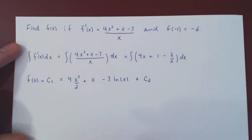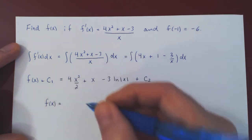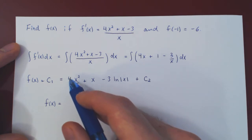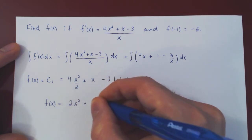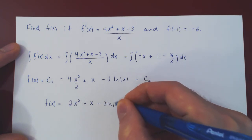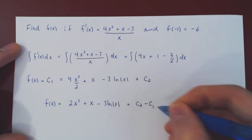Simply subtract c₁ on both sides, and you get that f(x) is equal to, we can simplify here to 2x², plus x minus 3 ln|x|, plus c₂ minus c₁.